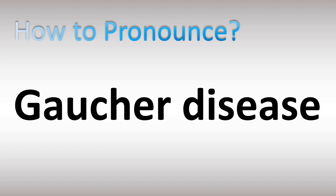We are looking at how to pronounce the name of this disease condition named after a French physicist. This is why it's pronounced Gaucher disease, not Goucher. A-U in French is like an O. C-H is pronounced like S-H, and E-R like A. Gaucher is how it's said in French, so Gaucher disease — now you know.